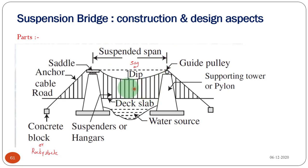Usually for a suspension bridge the span will be very large, maybe something like 600 meters to 2000 meters. The vertical cables are called suspenders or hangers.